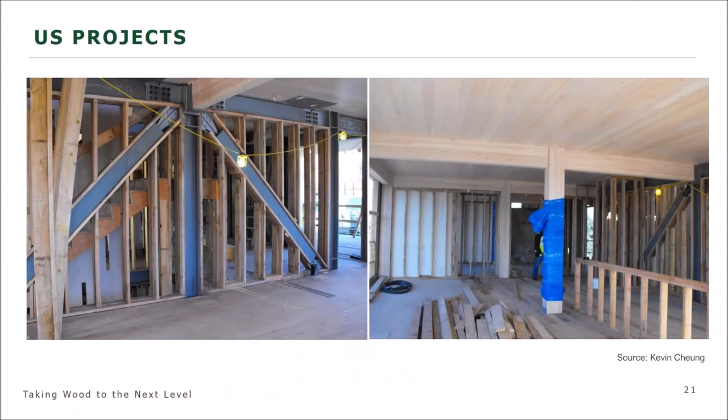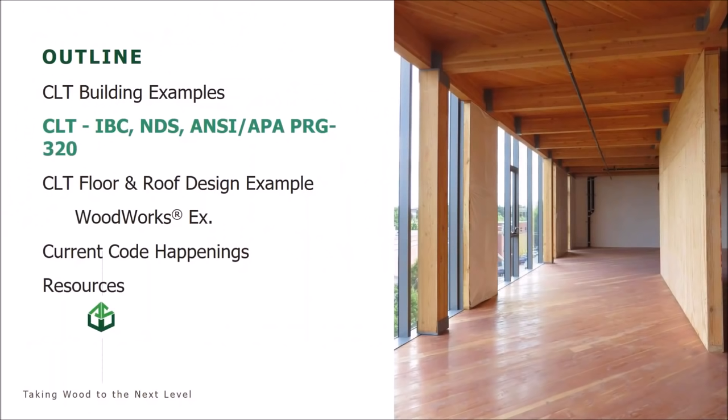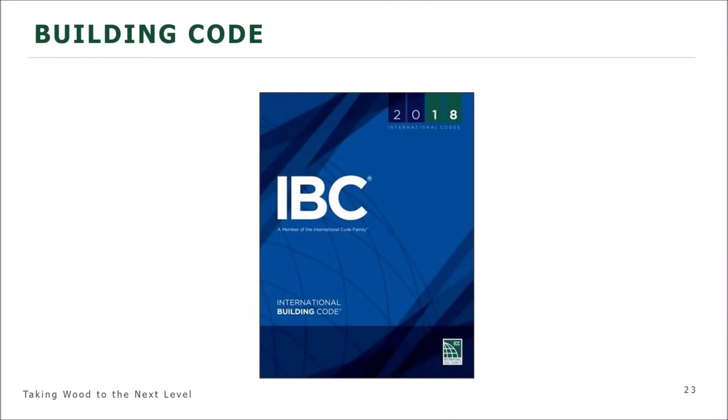Carbon 12 utilized buckling restraint frames for its vertical lateral resisting system, which was the core lateral resisting system, and the diaphragm is cross-laminated timber. Now that we've seen some examples of CLT and mass timber construction, we'll look at where the code has incorporated and adopted it.